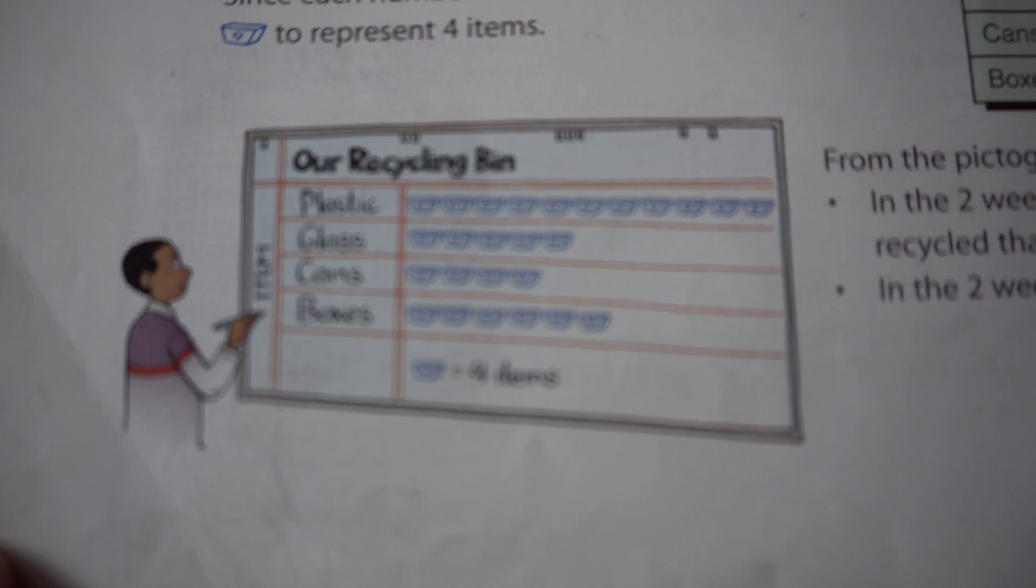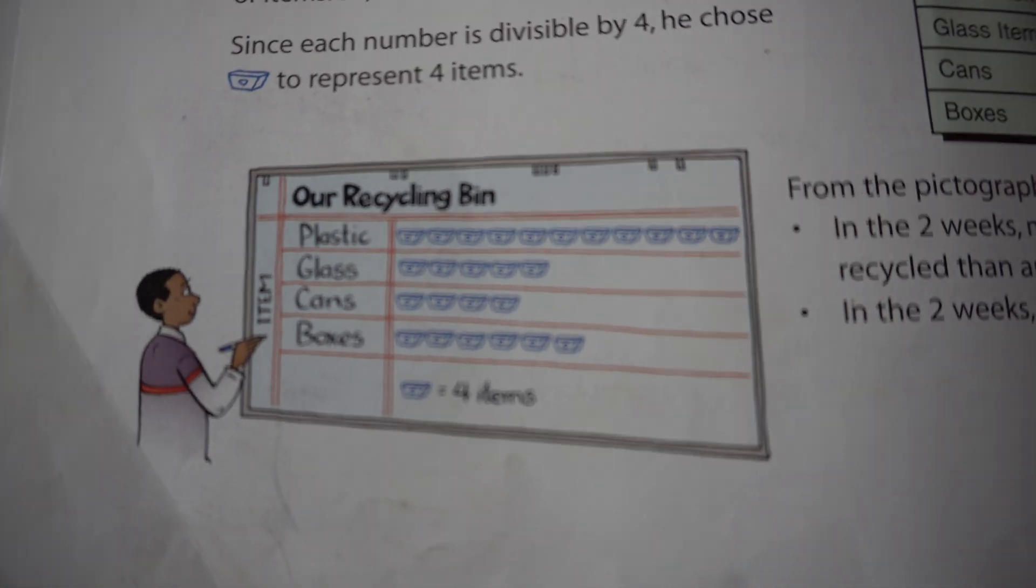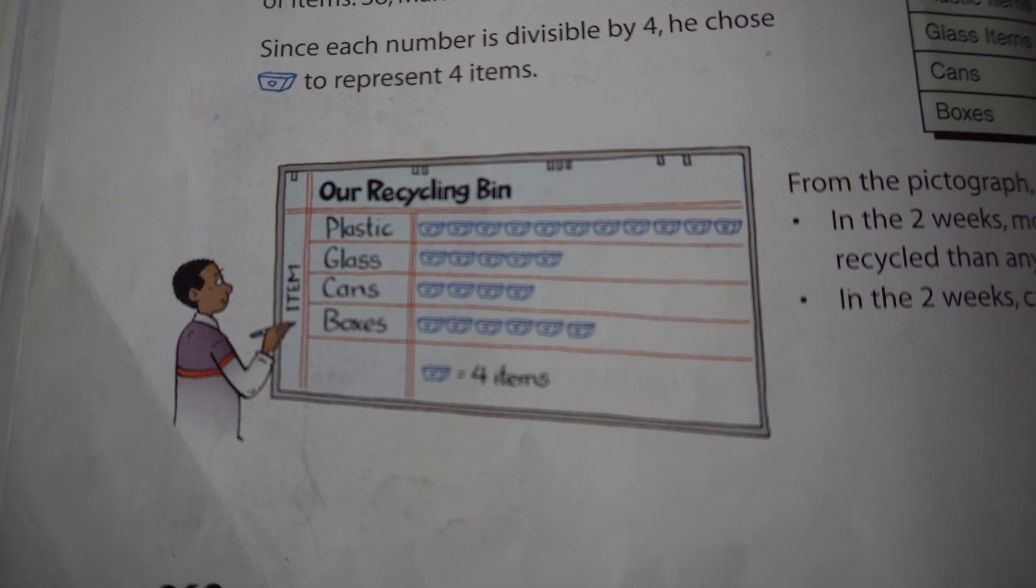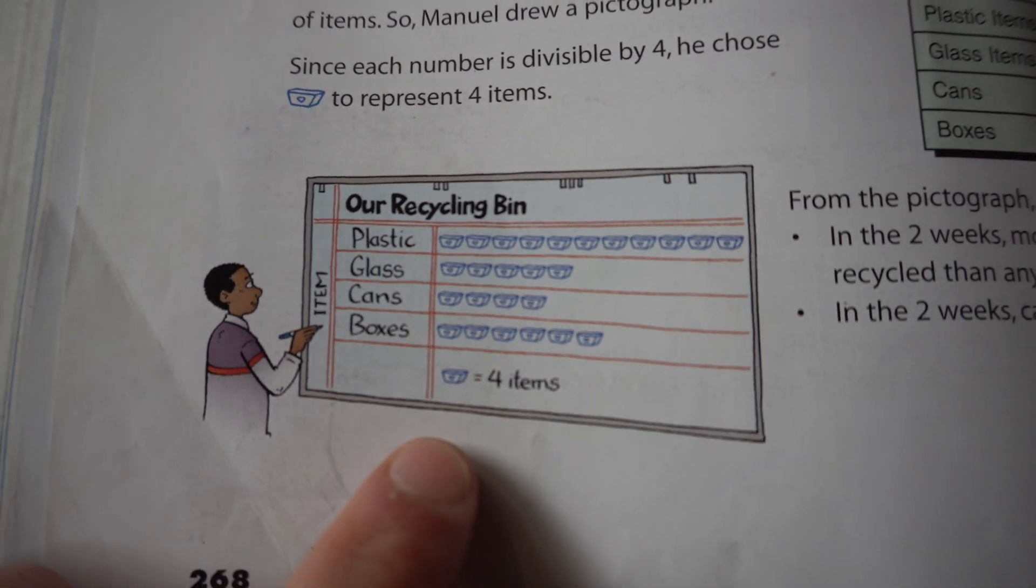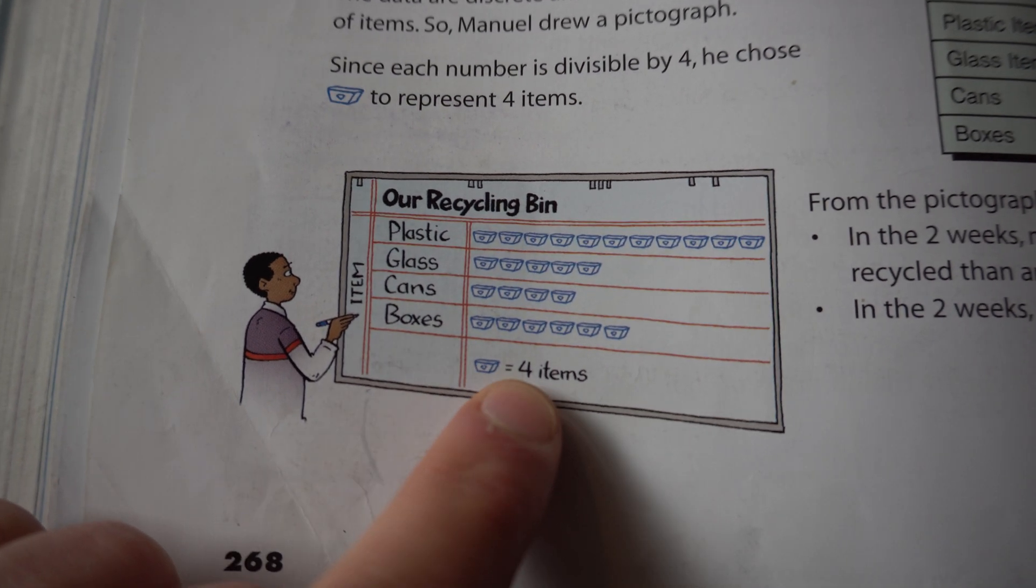Another example in the book is a recycle bin for what's being recycled. Okay, so here we have a boy drawing recycle bins and one recycle bin stands for four items.